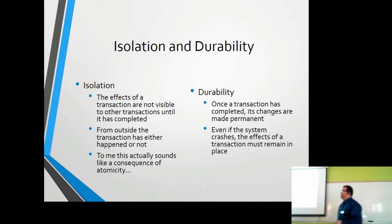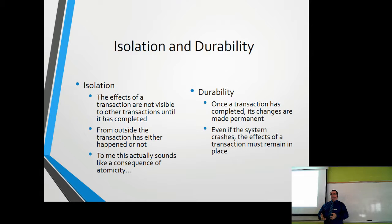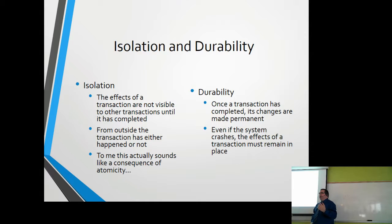Isolation means the effects of a transaction shouldn't be visible to another process. If you're adding records in one transaction, somebody else connecting shouldn't see those records until you've committed the changes. It runs in its own little bubble, and until the bubble is done, nobody else can see inside. From the outside, a transaction has either happened or not. This is basically a consequence of atomicity — if it's atomic, it will be isolated, and they go together.